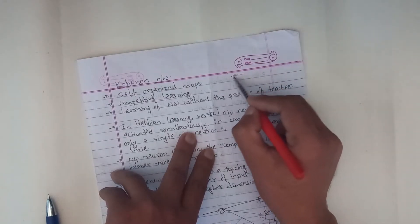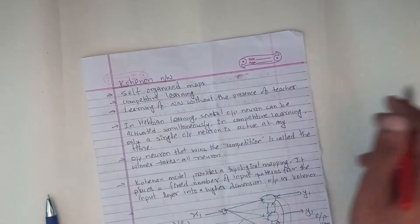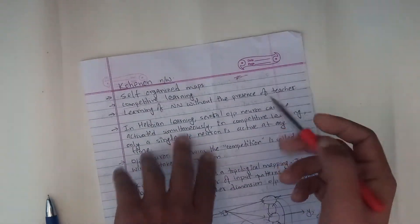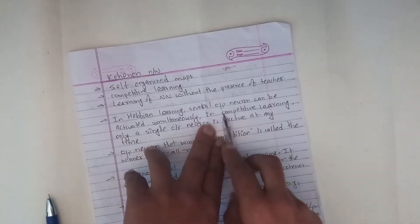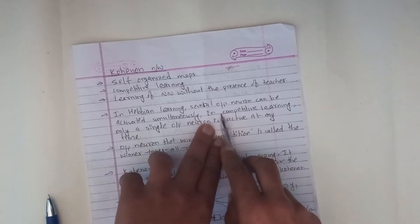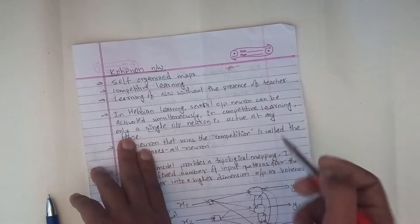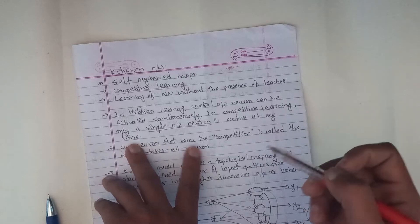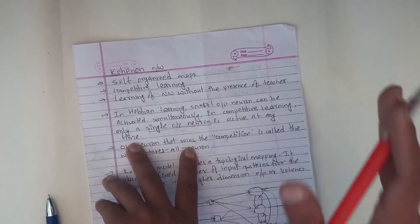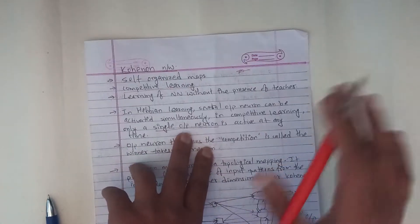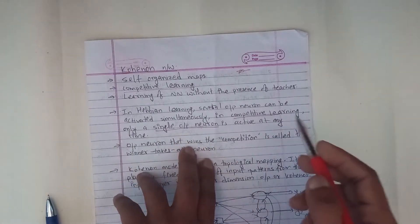Pre-synaptic weight increment. When output is activated, there is competition. In competitive learning, only a single output neuron is active at any time.